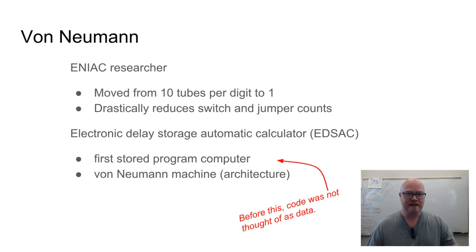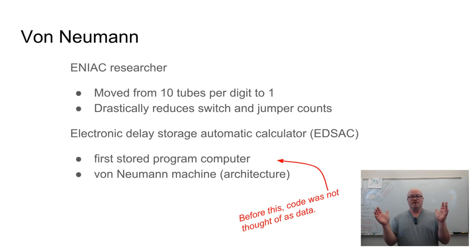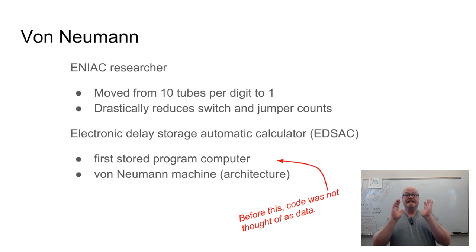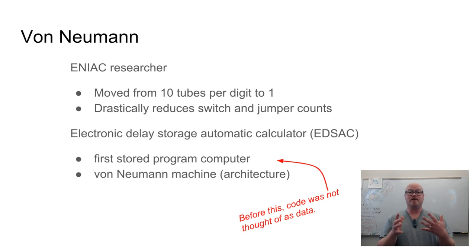Removing tubes, switches, and jumpers meant the physical size of the machine could be reduced — still huge, but significantly smaller than its predecessors. A smaller machine means signals travel a shorter distance, which can dramatically increase speed. Fewer glass vacuum tubes also meant less heat generation and fewer cracked tubes, making the device cheaper and more reliable. There are all kinds of interesting advantages that come as a side effect of moving from decimal to binary.